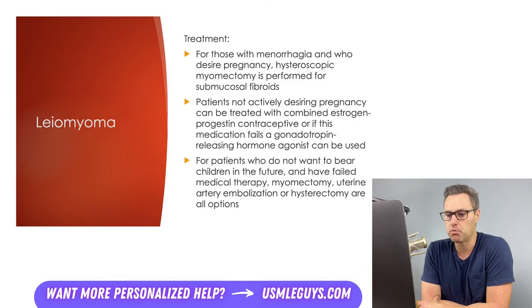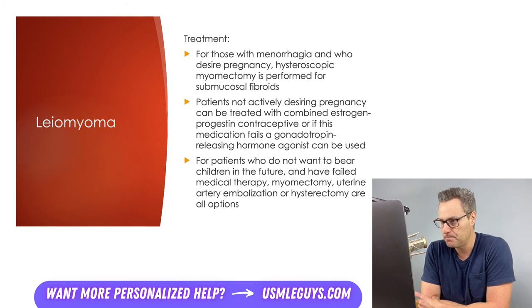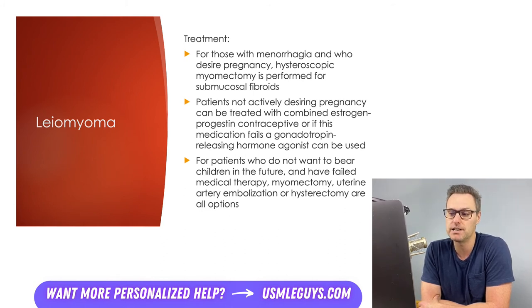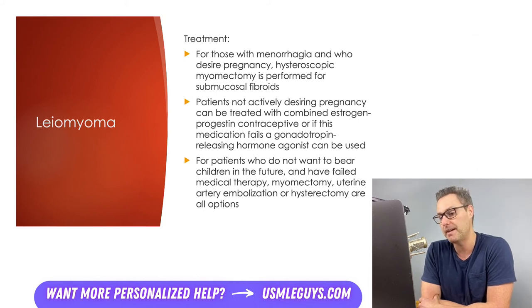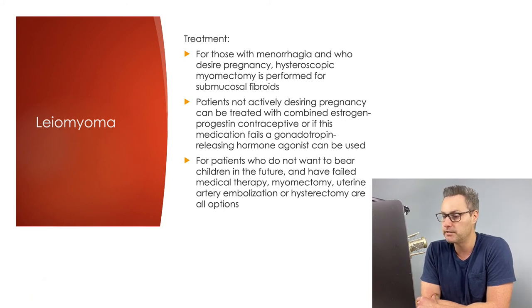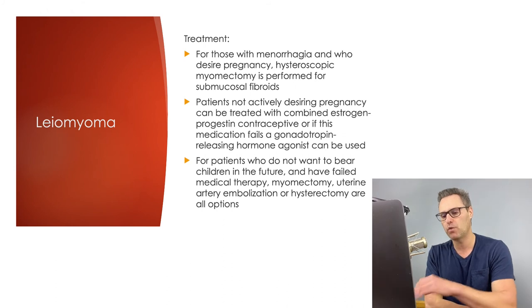There is a wide range of treatment options for uterine fibroids. For patients with menorrhagia or fibroid-related infertility who want to become pregnant, hysteroscopic myomectomy can remove submucosal fibroids. Patients not actively desiring pregnancy can be treated with combined estrogen-progestin contraceptives, or if that fails, a gonadotropin-releasing hormone agonist to decrease fibroid size. For patients not wanting future children or who have failed medical therapy, myomectomy can be used for bulky symptoms. Uterine artery embolization can drastically decrease menorrhagia, though hysterectomy may subsequently be needed. The definitive treatment is hysterectomy.